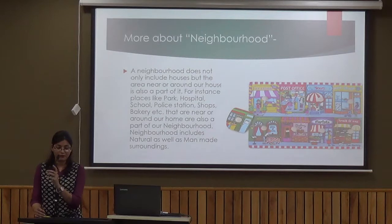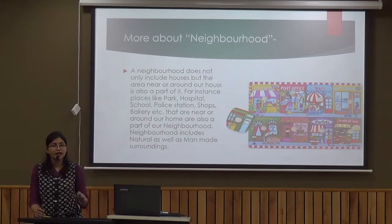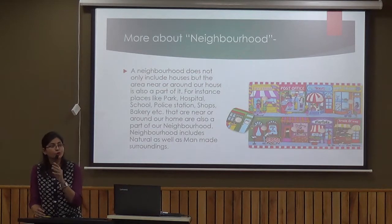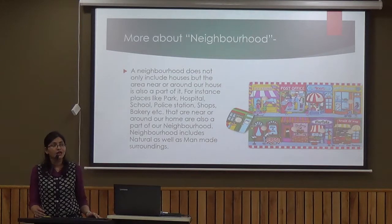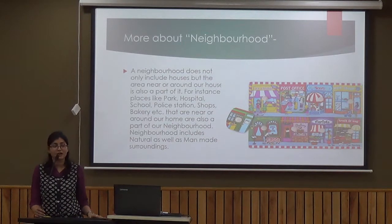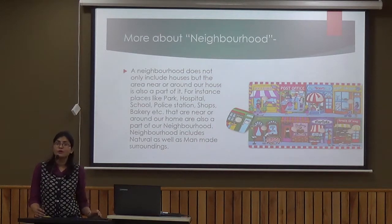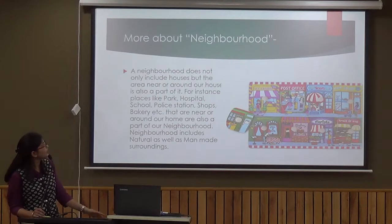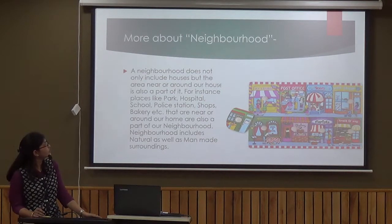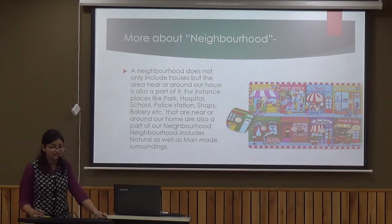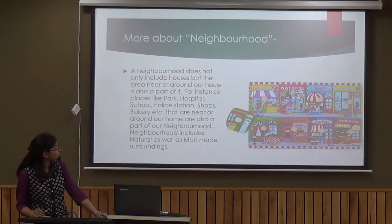Let's understand some more things about neighborhood. Have you seen that there are not just houses near your house? There are some shops — if you want to buy clothes, flowers, grocery, or fruits, there are shops near your house. There is a hospital or a doctor's clinic if you want to visit a doctor. A neighborhood does not only include houses; it also includes other places like park, hospital, school, police station, shops, bakery, etc., that are near or around our home.